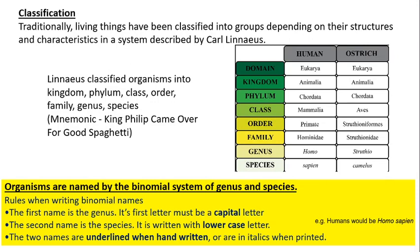The binomial system: whatever organism you have, you write their name using just the genus and species. Rules: the genus comes first with a capital letter; the species is second and all lowercase. For example: Homo sapiens. If you handwrite it, you must underline both names. If printed, they must be in italics. In exams, most students handwrite, so underline the names.